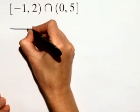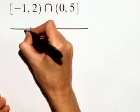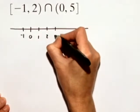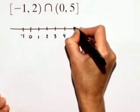So we'll go ahead and draw a graph. 0, negative 1, 1, 2, 3, 4, 5.